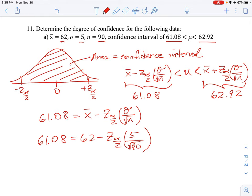What we can do here is let's subtract 62 on both sides. So 61.08 minus 62 is equal to negative z_α/2 times 5 over root 90. And I don't need to simplify too much here yet, we can just do it all in one step.